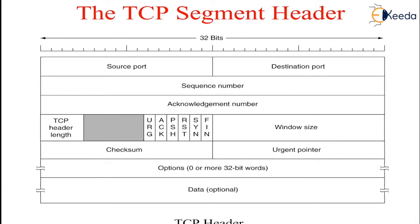The ACK bit is set to 1 to indicate that the acknowledgement number is valid. If ACK is 0,